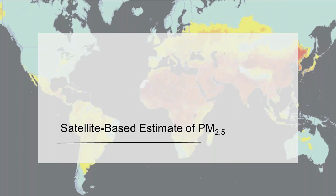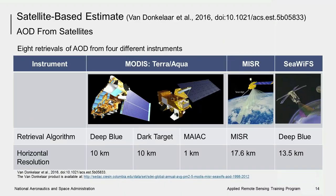In this next section, we'll highlight a particular satellite-based PM2.5 estimate that is also used by the DMAQ model. The method is described in detail in the paper by Von Donkelaar et al., 2016. This method first takes aerosol optical depth calculated from eight different retrieval algorithms from four different satellites, including MODIS, MISR, and SeaWiFS. This table shows the various sensors along with their algorithms and spatial resolutions.